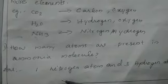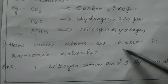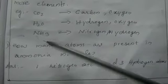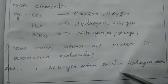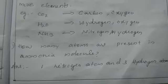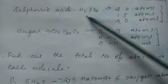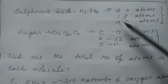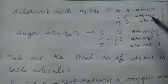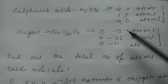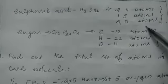How many atoms are present in an ammonia molecule? Ammonia molecule contains 1 nitrogen atom and 3 hydrogen atoms. Sulfuric acid, H2SO4, contains 2 hydrogen atoms, 1 sulfur atom and 4 oxygen atoms.